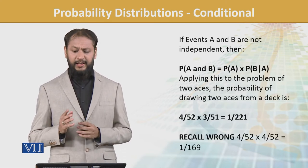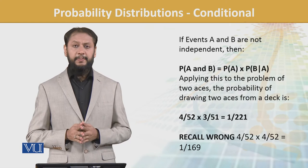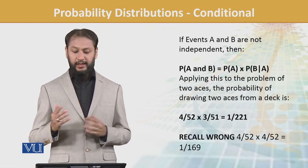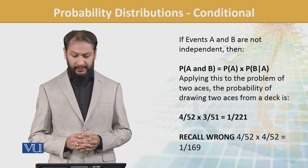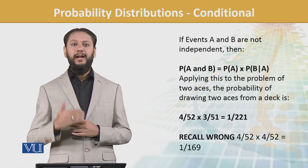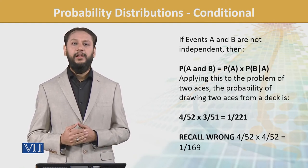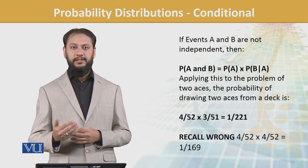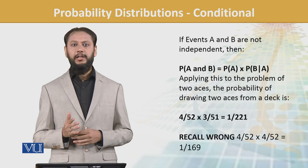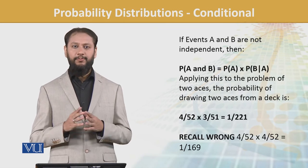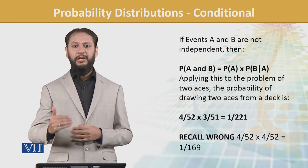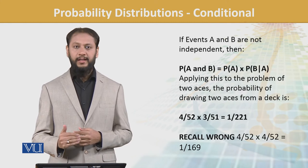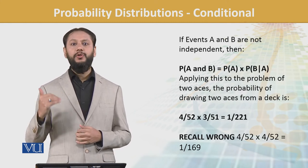If events A and B are not independent, then P(A and B) = P(A) × P(B|A). Applying this to the problem of two aces, the probability of drawing two aces from a deck is: 4/52 × 3/51 = 1/221.